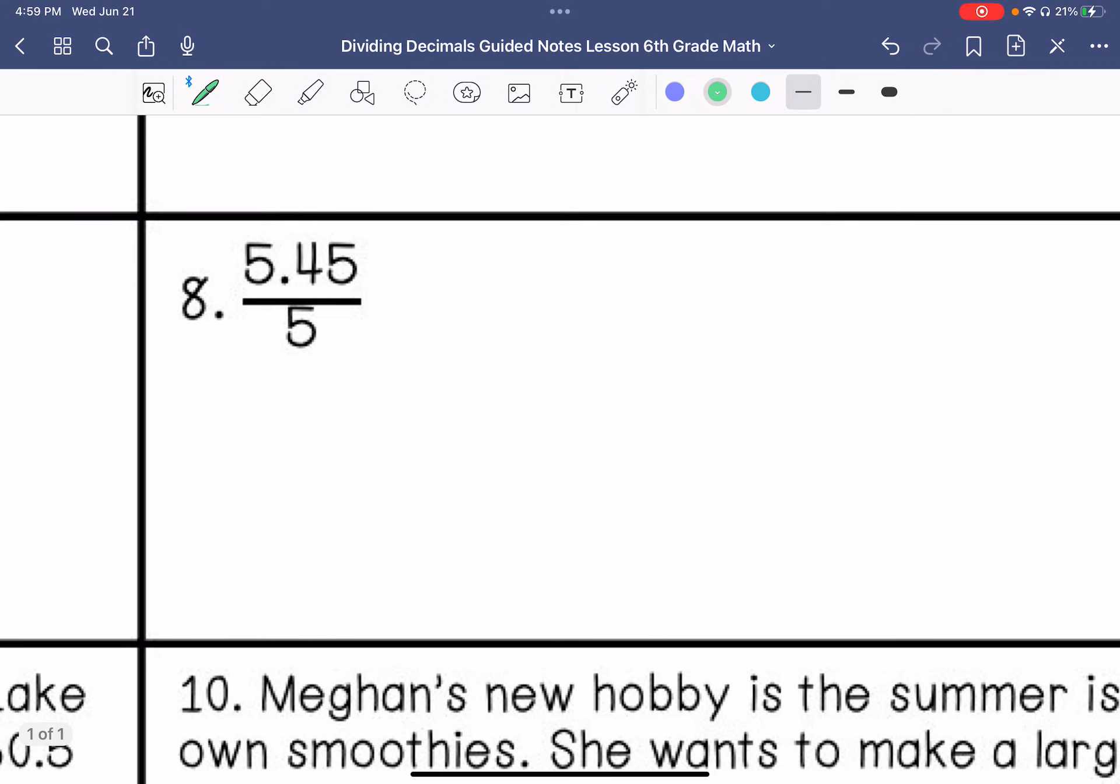Number 8. 5.45 divided by 5. 5 goes into 5 once. 5 cannot go into 4. And then 5 goes into 45 nine times.